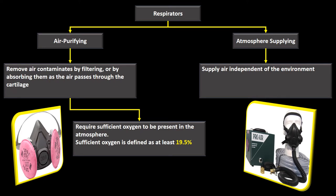Because air purifying respirators use the atmosphere that's already present, oxygen must be present in sufficient quantity. There's no oxygen apparatus attached, so you can only use them when there's at least 19.5% oxygen in the air.